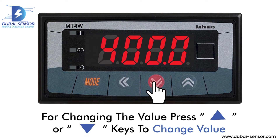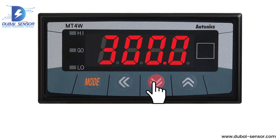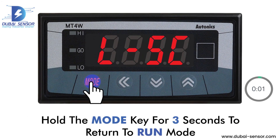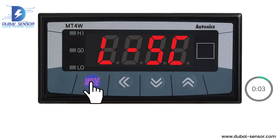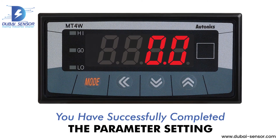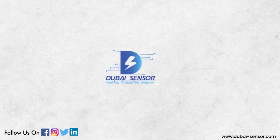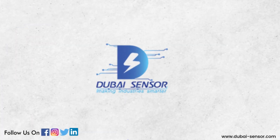For changing the value, press the up arrow symbol or down arrow symbol keys. Set the value to 300.0 and press the mode key. Hold the mode key for 3 seconds to return to run mode. You have successfully completed the parameter setting.